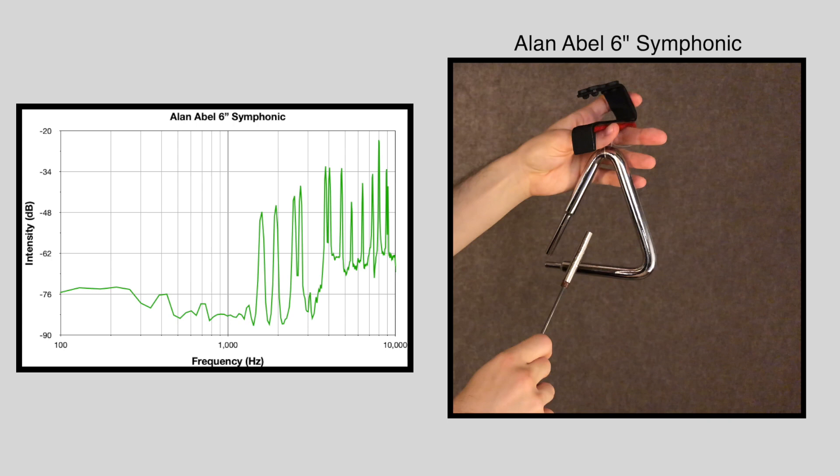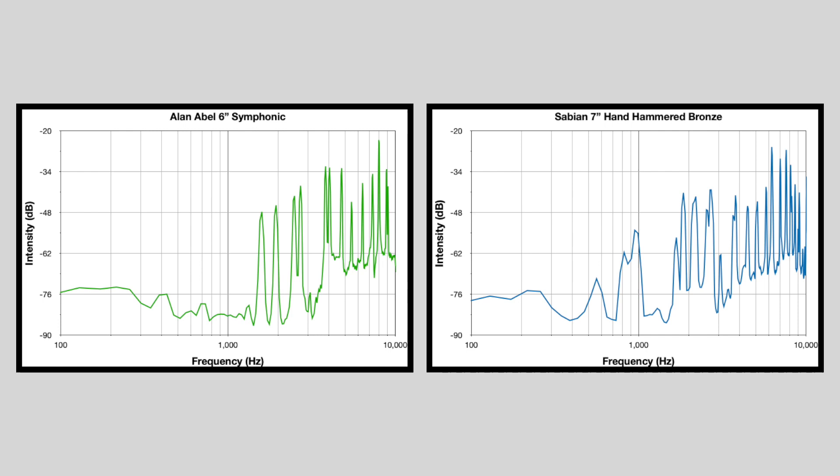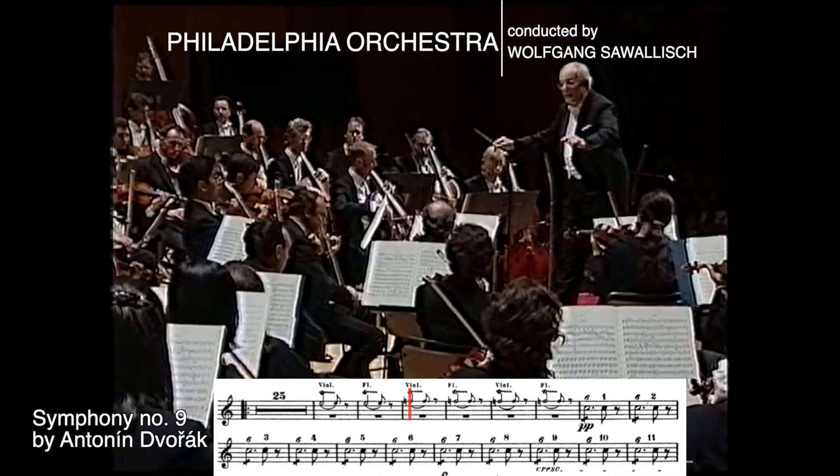The next triangle, an Allen Abel six inch symphonic triangle, is probably the most pure sound you could find in a professional instrument. It really highlights more of the upper frequencies, and we can tell by comparing it to the first triangle. See how there are less spikes in the high frequencies and almost no spikes in the mid and lows.